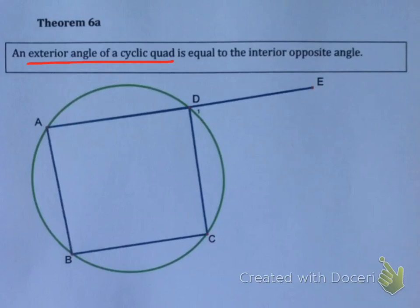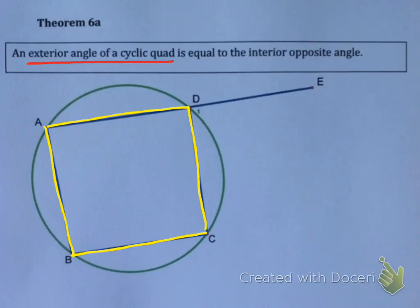Theorem 6a says: an exterior angle of a cyclic quad. Now what's an exterior angle? Well, in this example, ABCD is a cyclic quad. The exterior angle in this case is angle D. What happens is, if you take one of the sides of a cyclic quad and you produce it — keep extending it until E in this case — the angle that forms outside the cyclic quad is called the exterior angle. This theorem says that the exterior angle is equal to the interior opposite angle. So in this example, angle D1 equals angle B — it's the interior inside, but in the opposite corner.